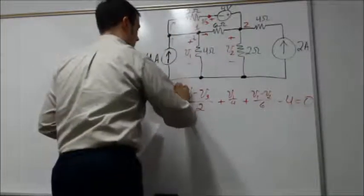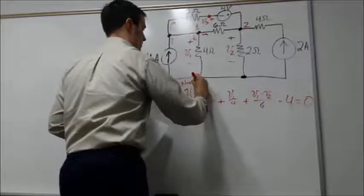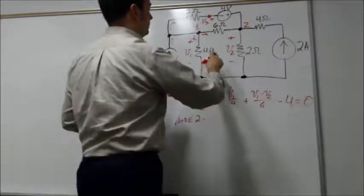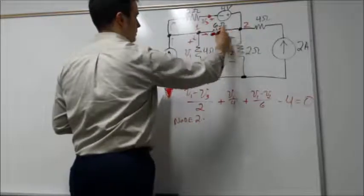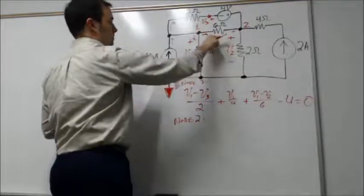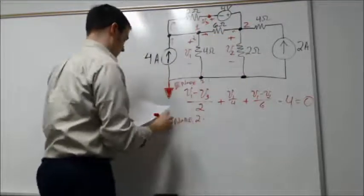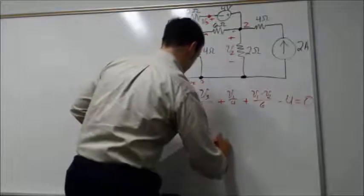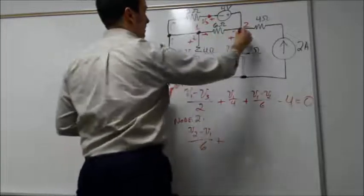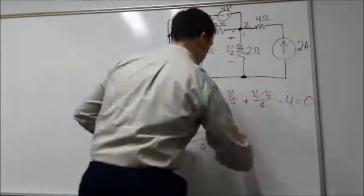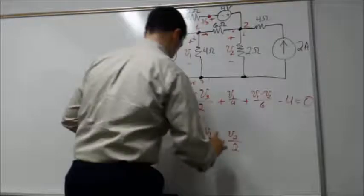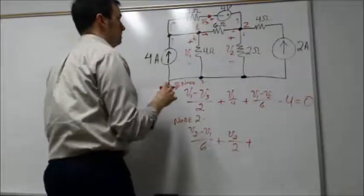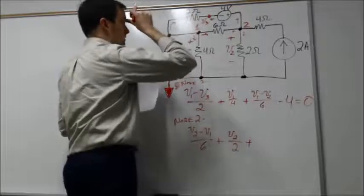For node two, we start with the current flowing out in this direction across the 6-ohm resistor. That's (V2 - V1)/6 ohms. Plus, the current traveling down through this 2-ohm resistor, which is V2/2 ohms. Then the current traveling up through this branch here. To define this current, I look at what's happening across this resistor.